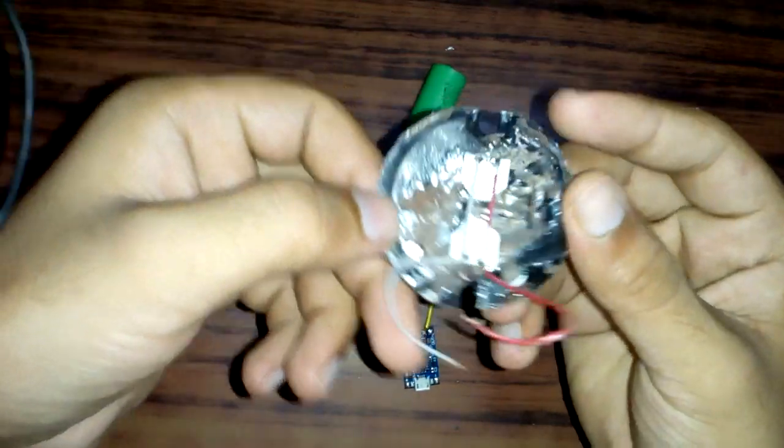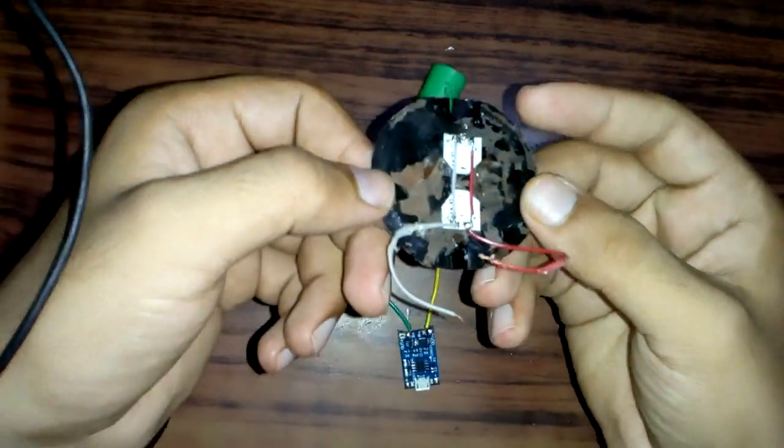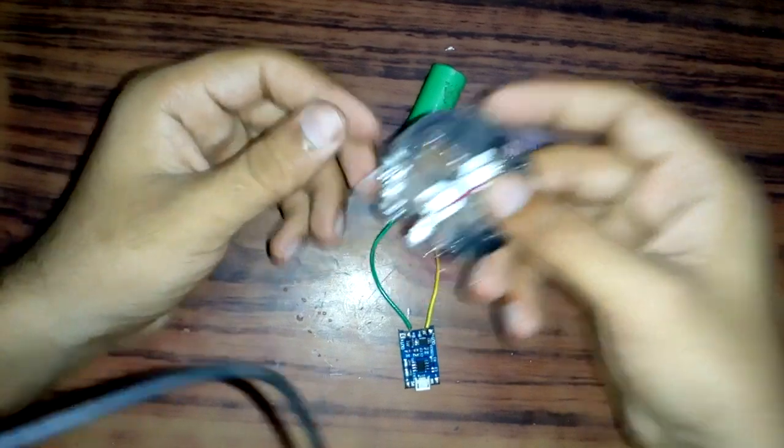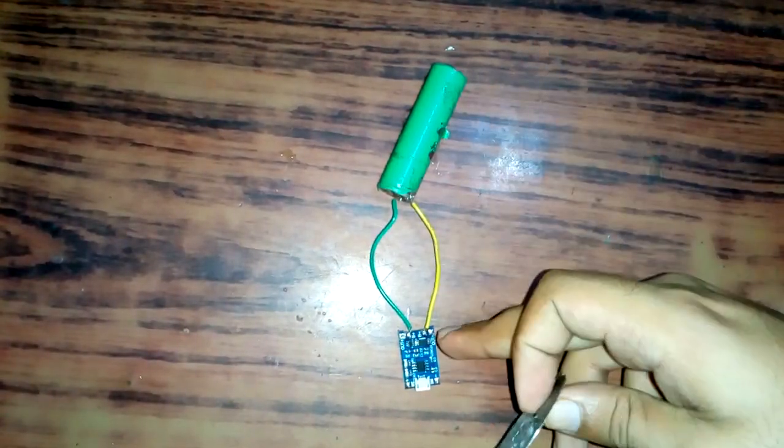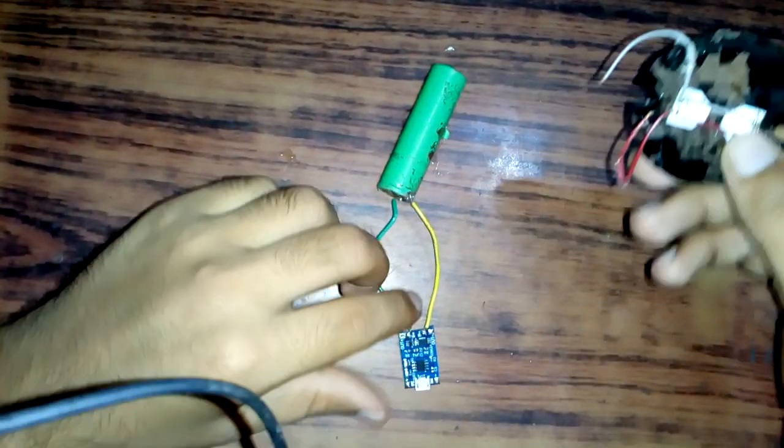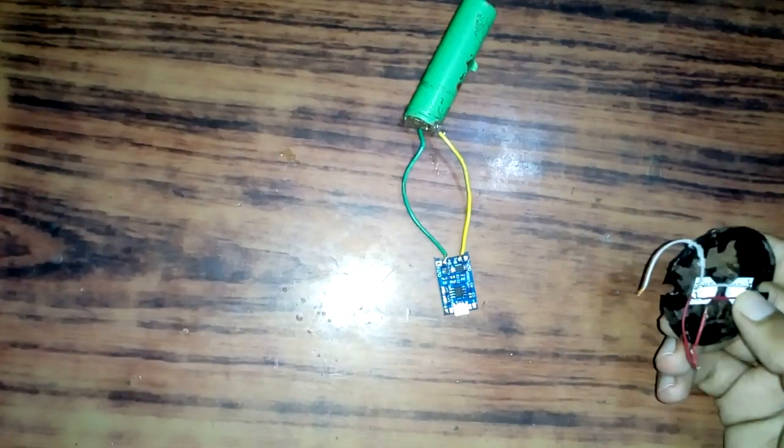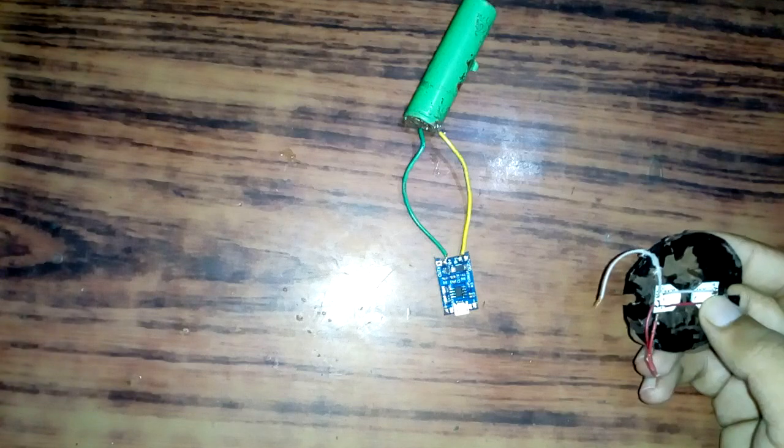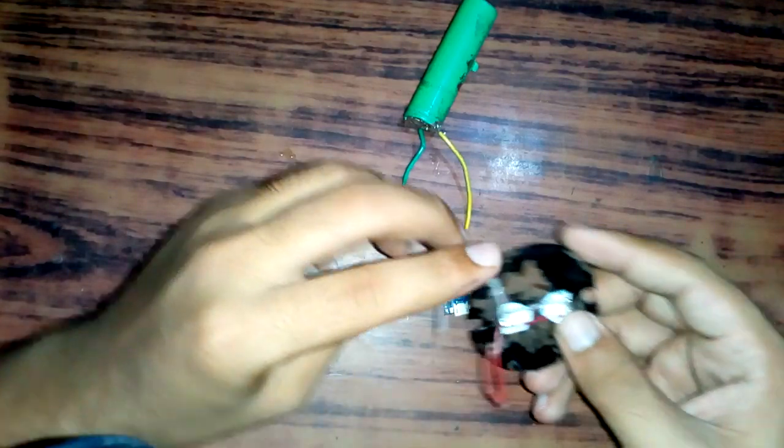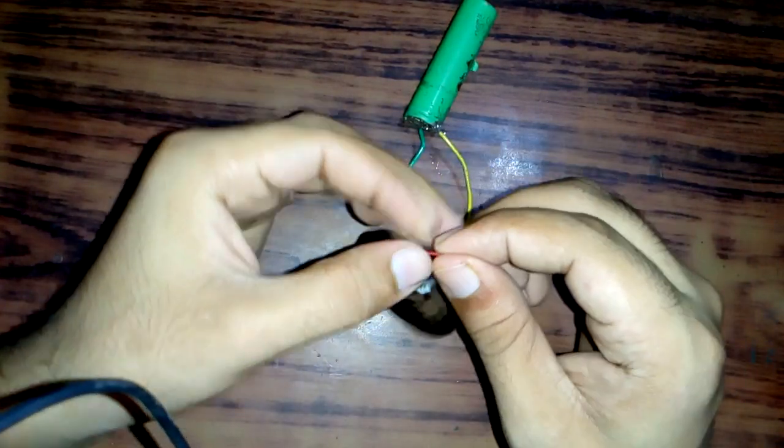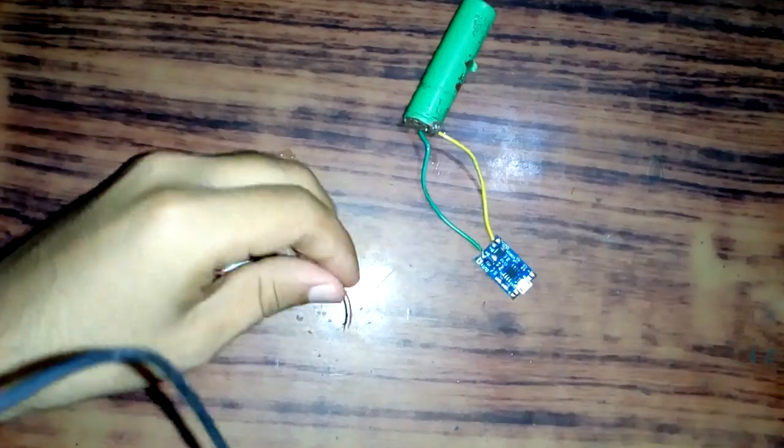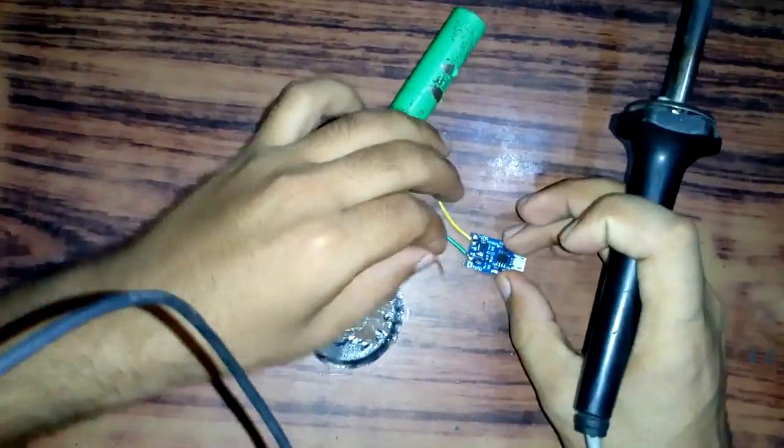I will power these LEDs, these are 4 volt LEDs. I will connect these LEDs to this module at the out terminal. So let's solder them on the module. This is the positive terminal and I am soldering it on the out plus terminal.